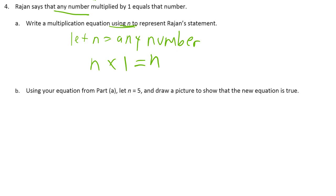So if n equals 5, we have n times 1 equals n. And if n equals, we can say let n equal 5. And so then we have, we'll put 5 in wherever n is. So 5 times 1 equals 5. There's our equation.